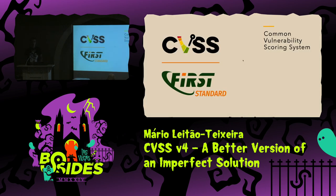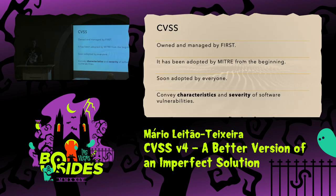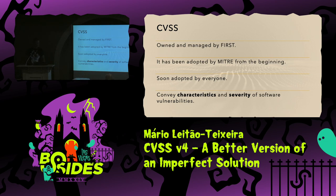CVSS stands for Common Vulnerability Scoring System. It's defined as a vendor-agnostic industry open standard. By the book, it's owned and managed by FIRST, a US-based nonprofit organization that started originally with a mission to help security incident response teams across the world. It has been adopted by MITRE from the beginning, who runs the CVE program, and associated with CVEs as the scoring standard. It soon became adopted by everyone as the number one scoring standard. The idea is that it will convey characteristics and severity of software vulnerabilities.